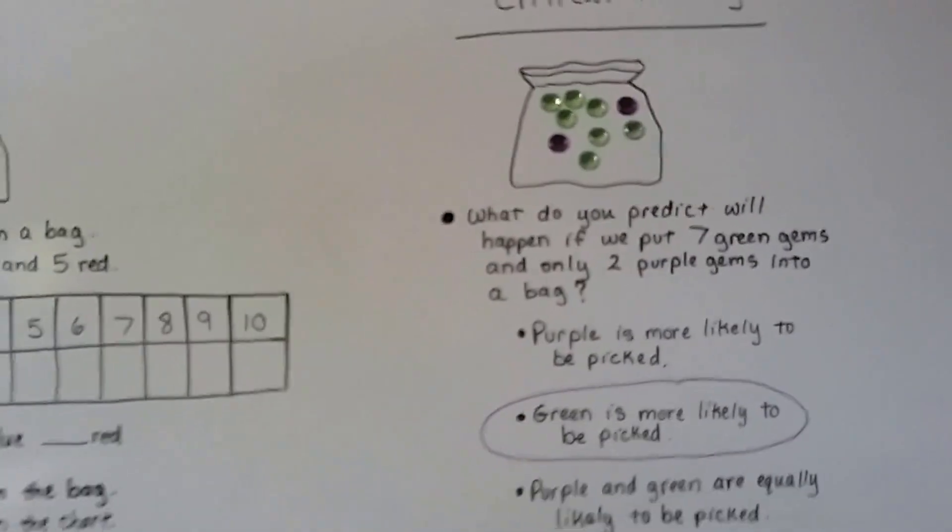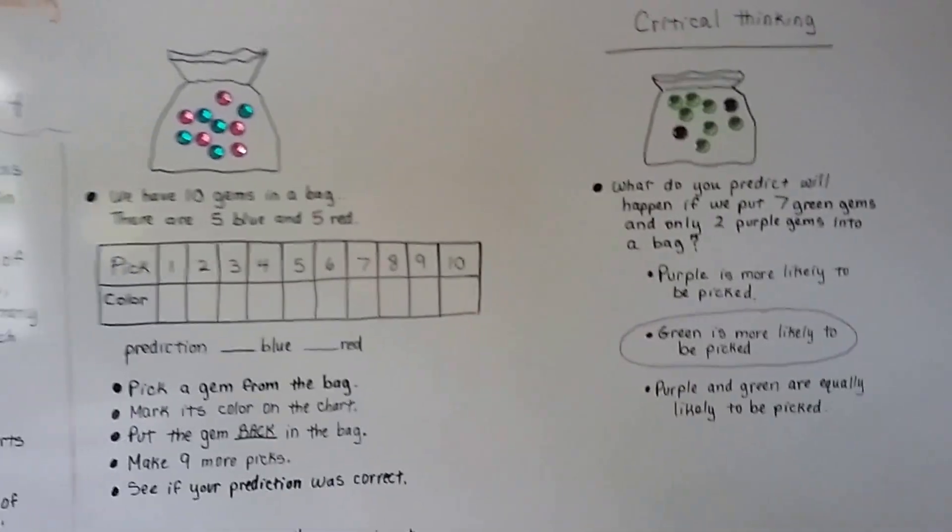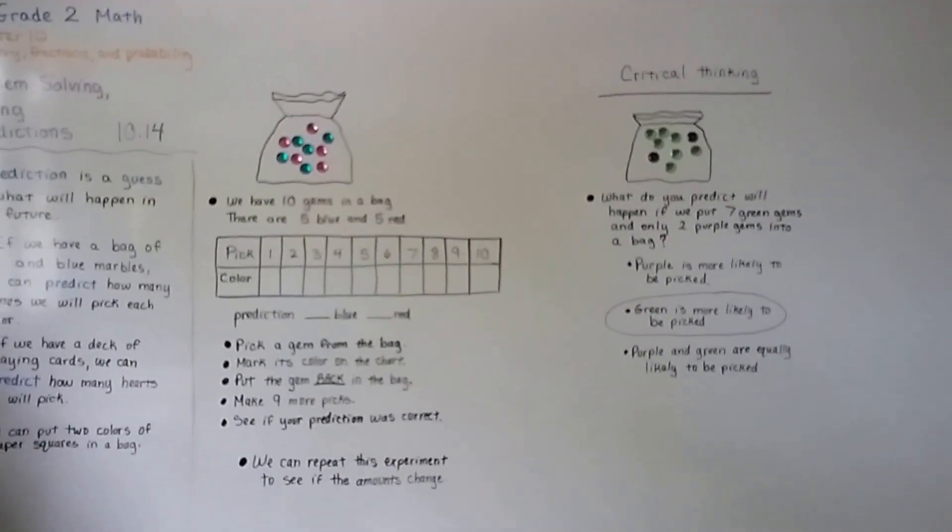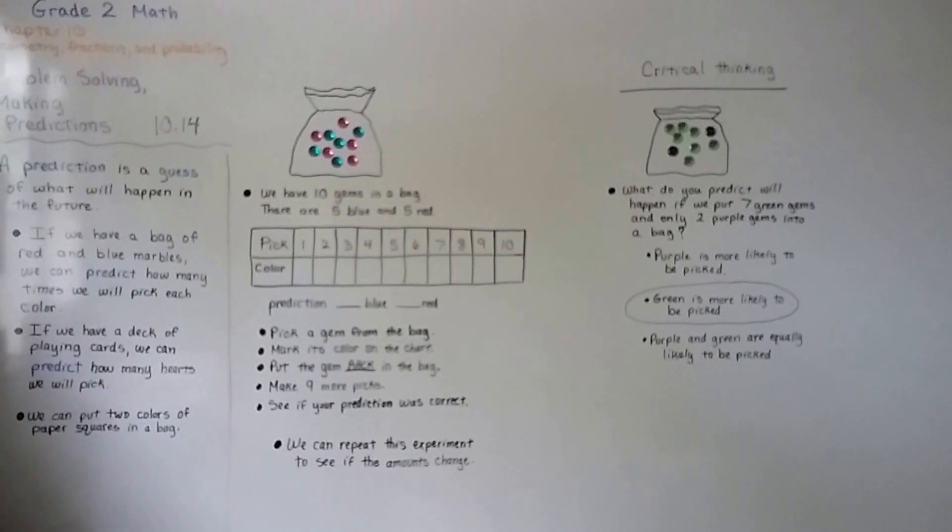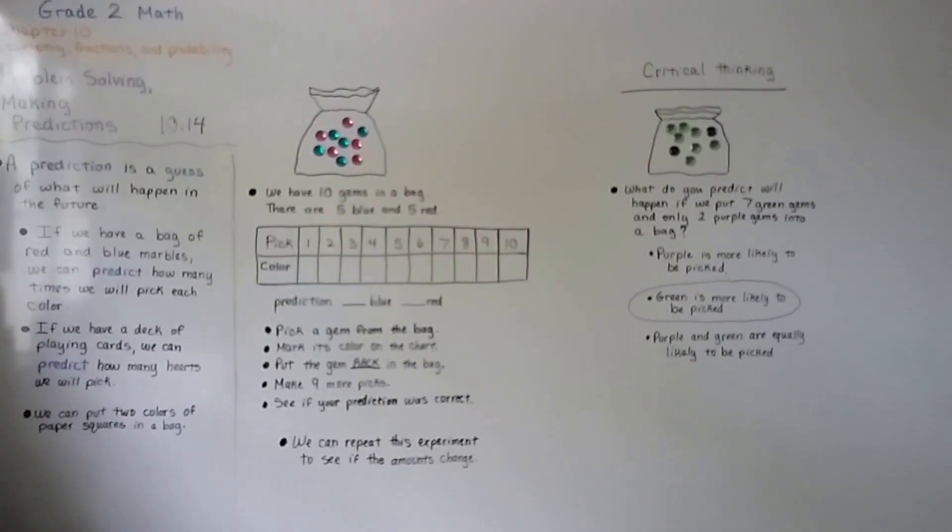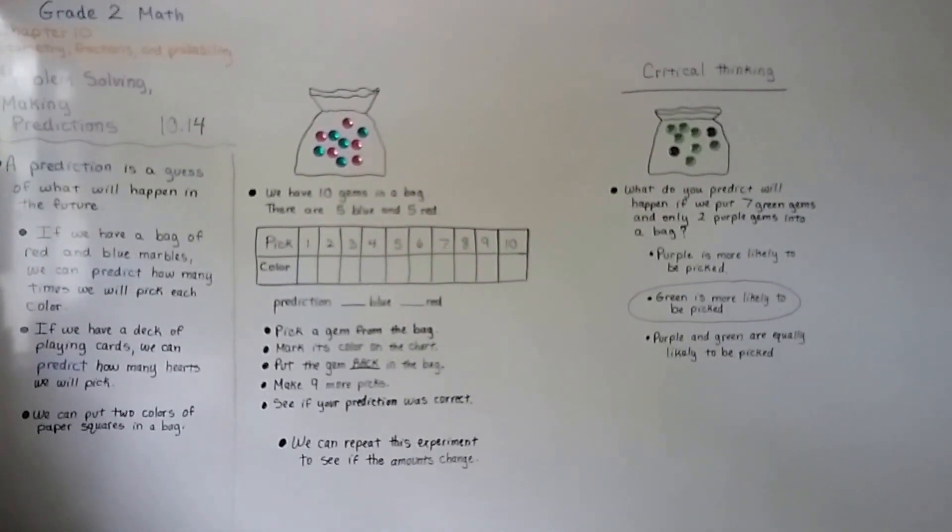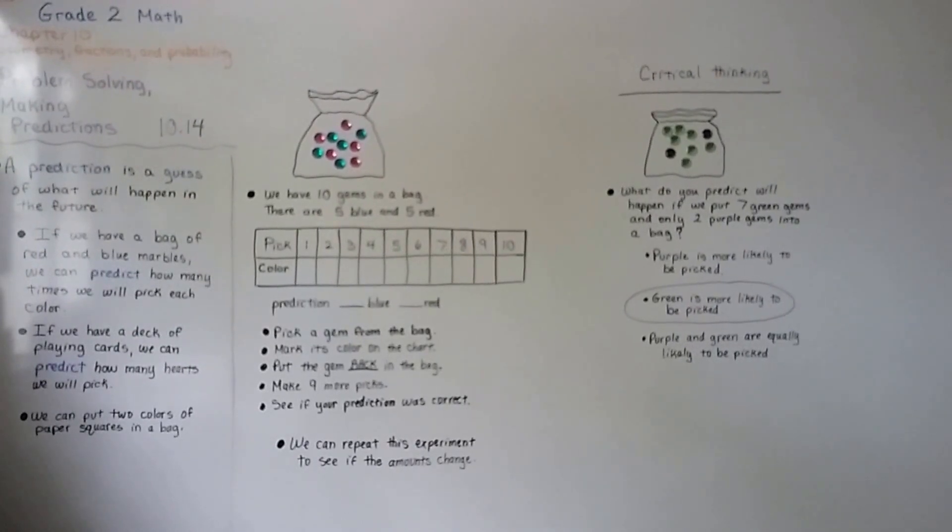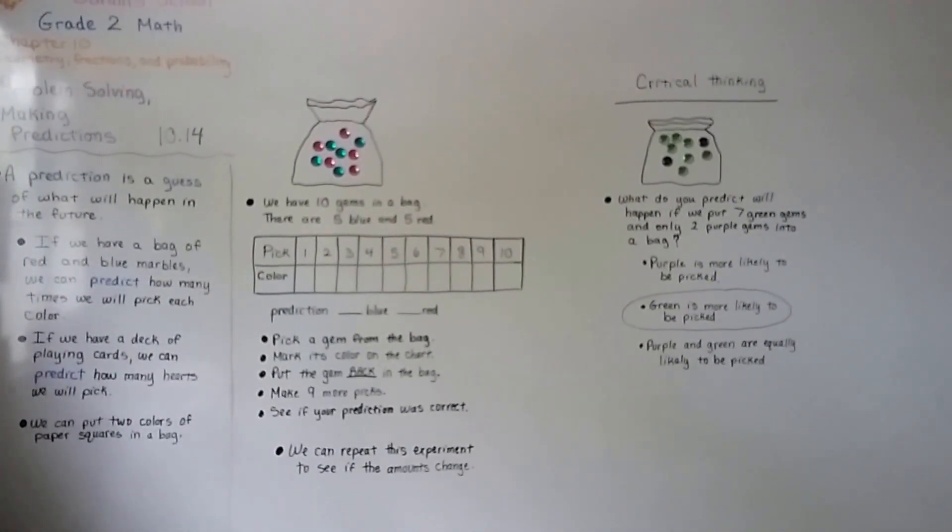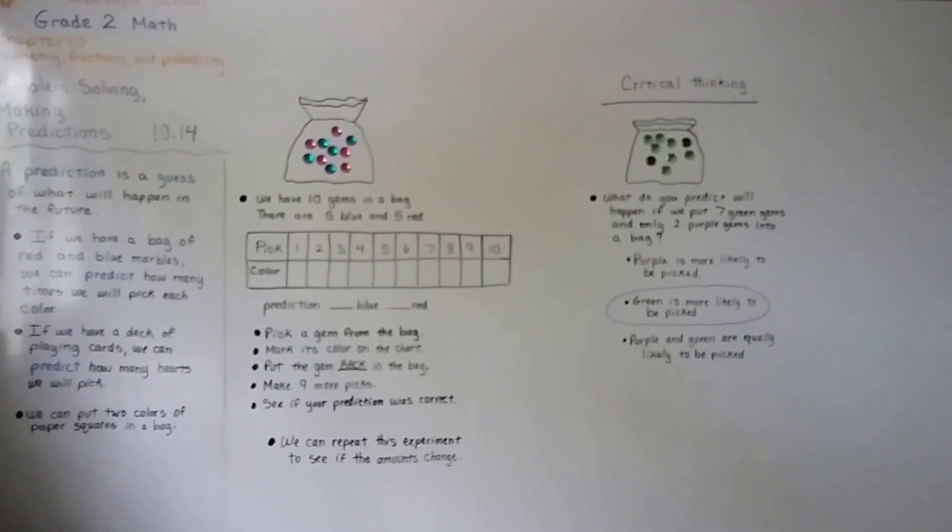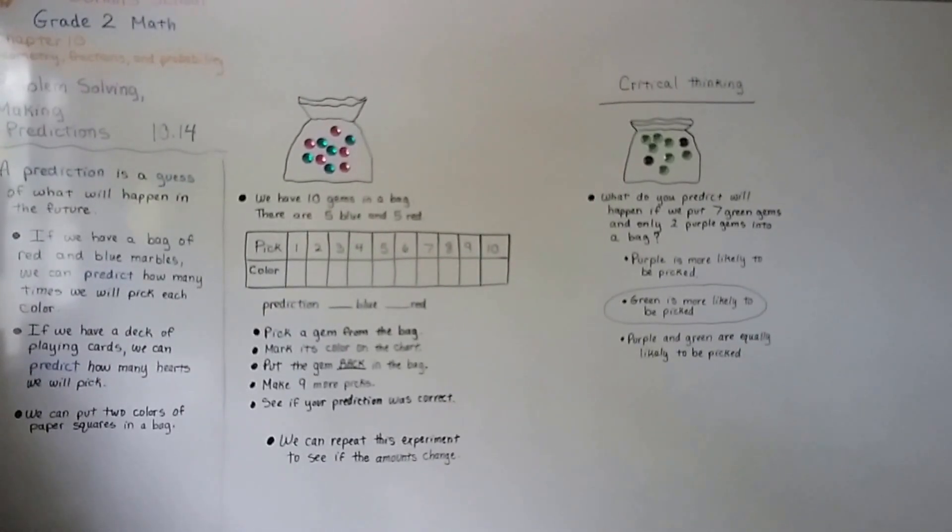So, that's making predictions, and you can make your own predictions, and you can try your own experiment, okay? Alright, we're going to talk about ordered pairs in the next lesson, and that'll be the last lesson for Chapter 10. I hope you're doing well, and I'll see you there. I'm proud of you. Bye!